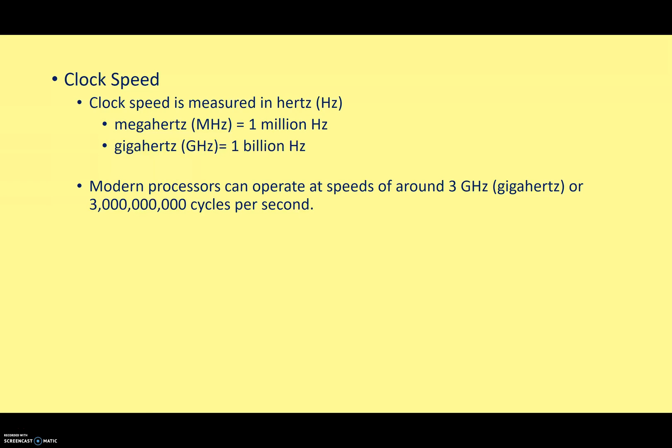So just take a moment to think about that. One, one, one. In every tick, it could be performing three, three and a half, four billion different instructions. That's why computers are very, very fast at doing calculations.